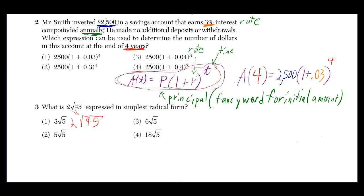2,500 is the original amount, and we've got to put then times 1 plus the rate, which is 3%. There's a decimal, it's 0.03. And then there's four years, so you want to put that as your exponent.